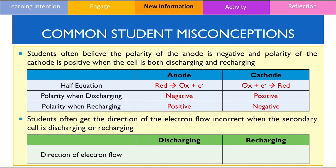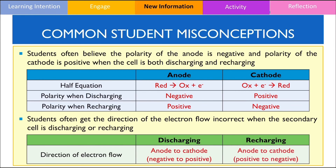Another common mistake students make is indicating the direction of electron flow when the cell is discharging and recharging. When the secondary cell is discharging, electrons flow from the negative to positive electrode. However, this process is reversed when the cell is recharging, so electrons move from the positive to negative electrode. I would like to emphasise that in both of these processes, electrons are always moving from the anode to cathode.